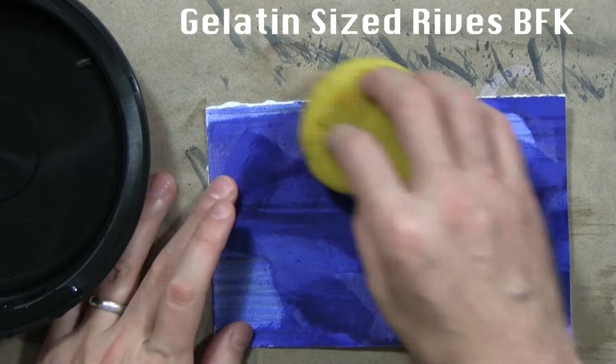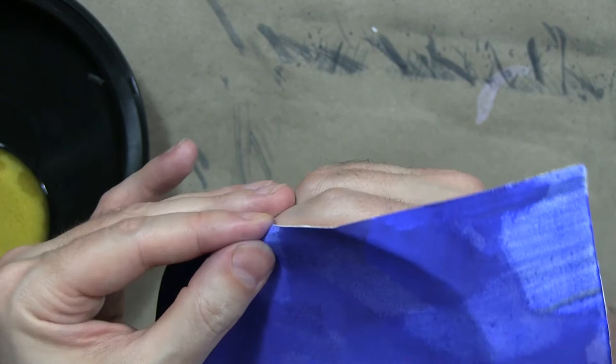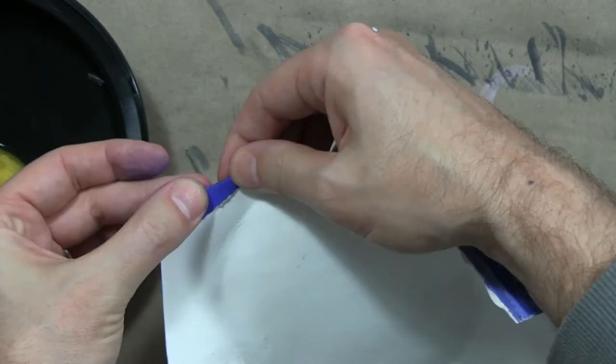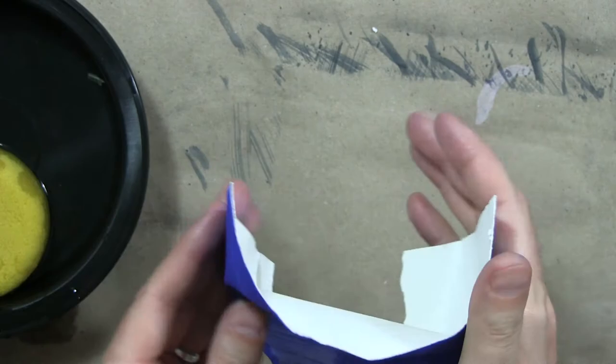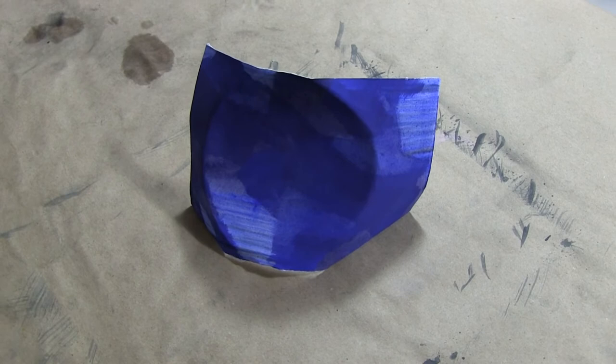I just wanted to show that this can also be done if we prepare the paper in a certain way, here with gelatin size that's been tinted with pigments. And gelatin size is not water soluble, so the color is going to stay there. And we can do the same process that we went through before.